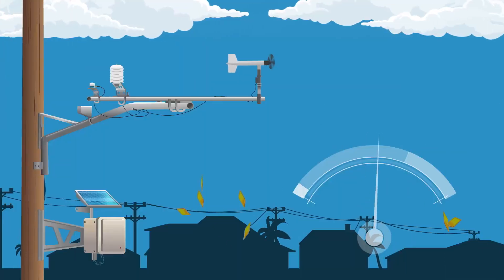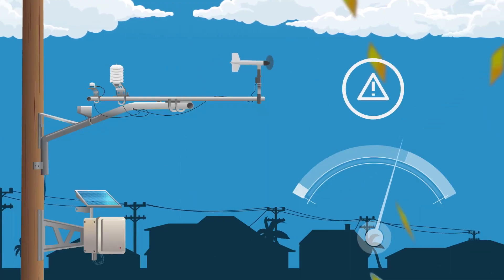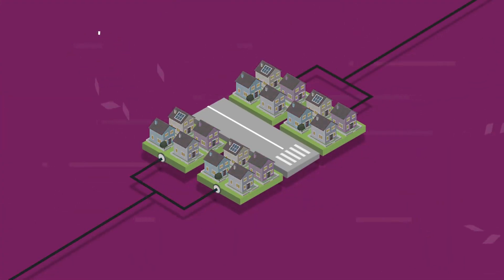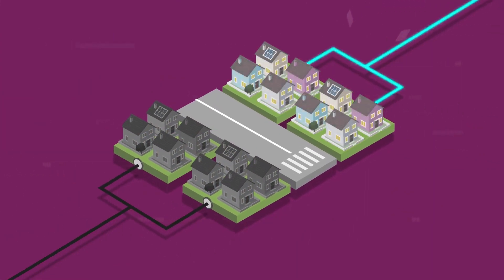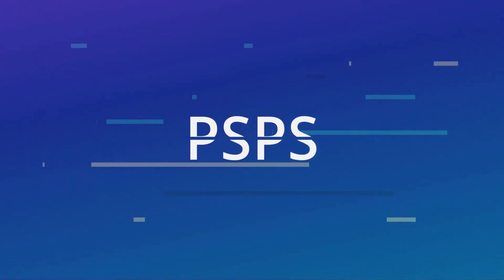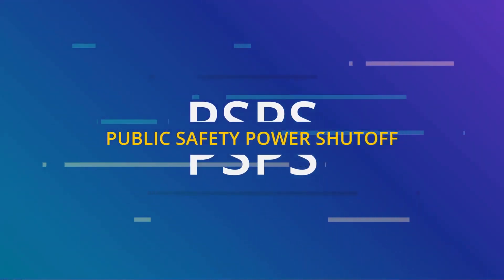As the wind speeds get close to dangerous thresholds, we ask: do we need to turn off power to some customers to protect their neighborhoods? And what can we do to minimize the number of customers who lose power? Public safety power shutoffs are our tool of last resort.